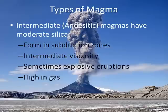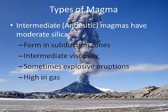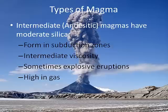Intermediate magma — like diorite and andesite — is halfway between felsic and mafic. These magmas have a moderate amount of silica, so they have characteristics of both felsic and mafic magmas. They're intermediate in viscosity, sometimes form explosive eruptions but not as often as felsic magmas, and they are high in gas. We find intermediate magmas in subduction zones.